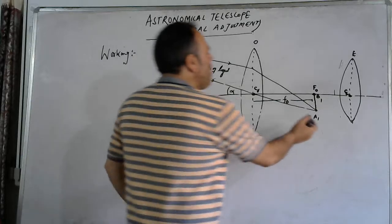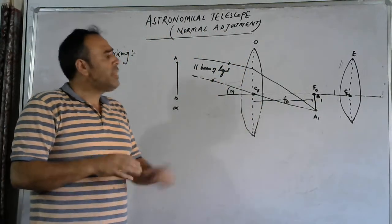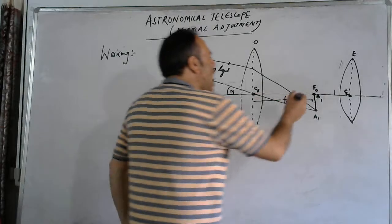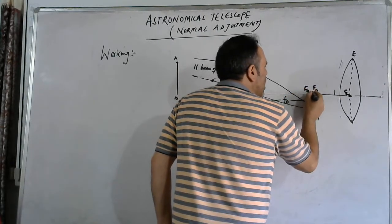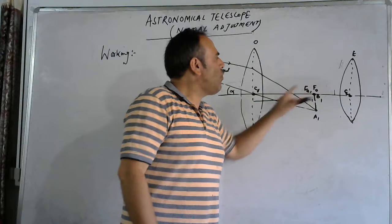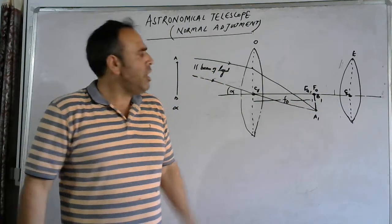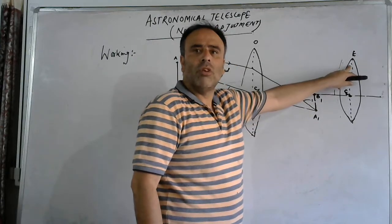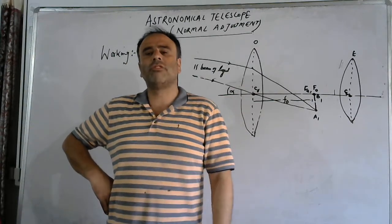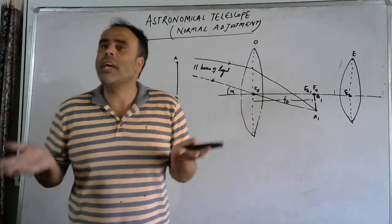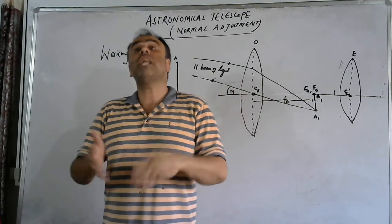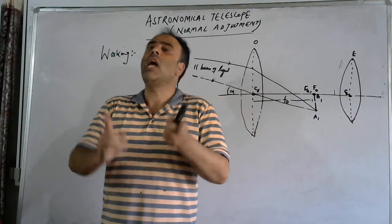Now, this image A1, B1 acts as the object for the eyepiece. We will adjust this eyepiece such that A1, B1 lies at its focus Fe. This means the focus of the objective and the focus of the eyepiece coincide with each other. A1, B1 lies at the focus of the eyepiece, which is a convex lens. When an object lies at the focus of a convex lens, the convex lens forms its virtual, erect, and magnified image at infinity, as per the rules of image formation.